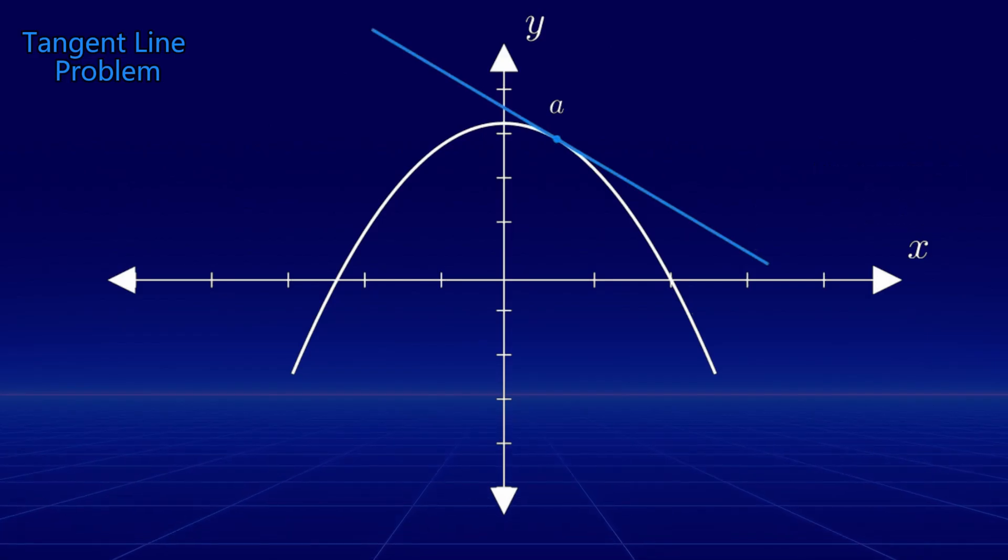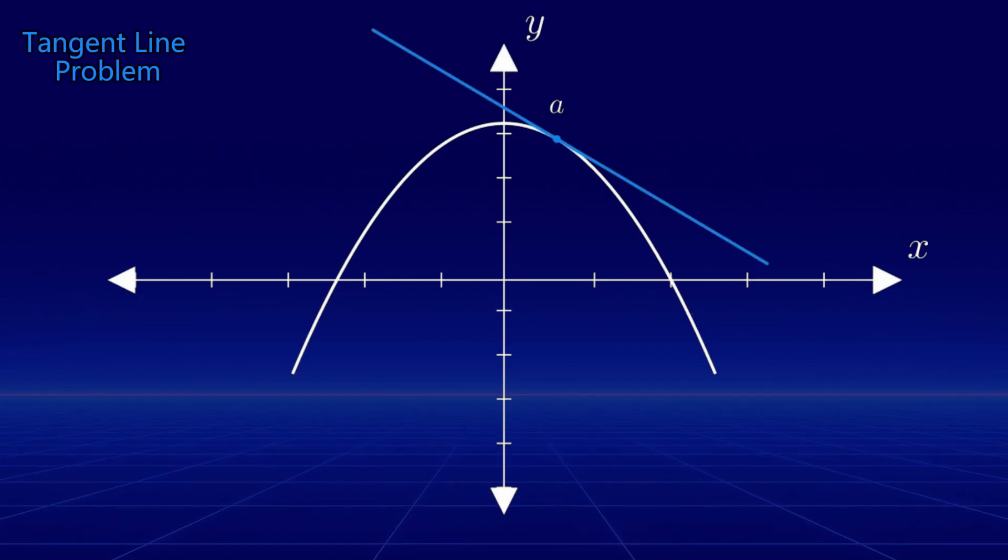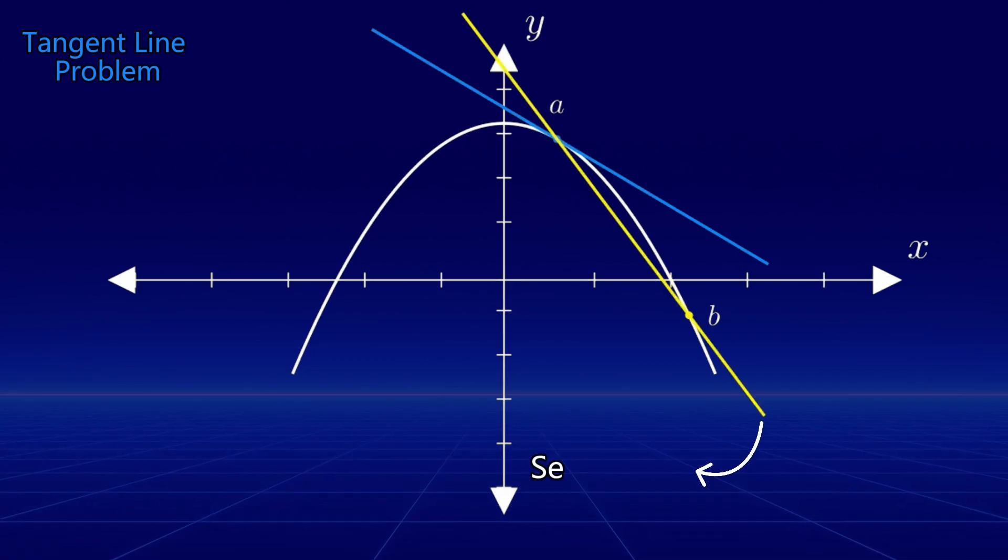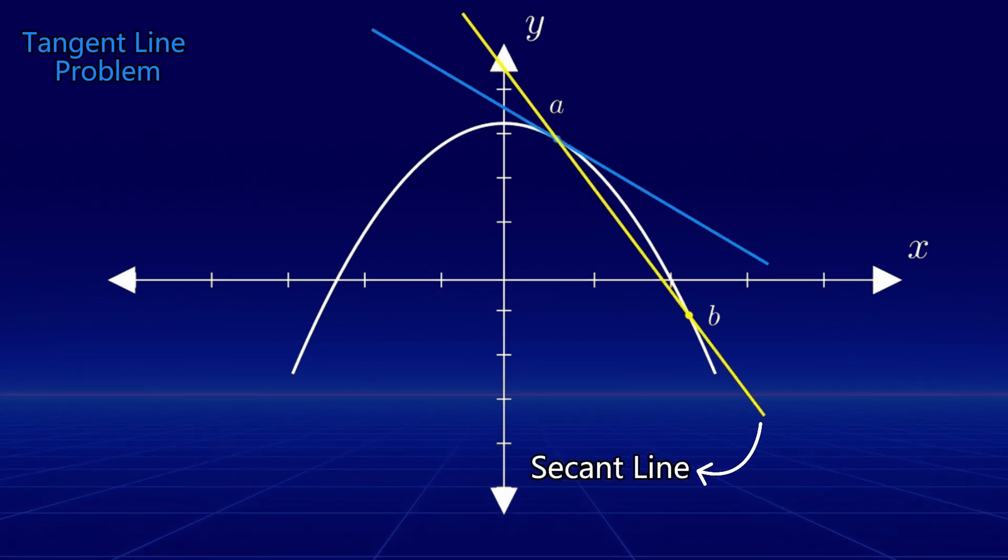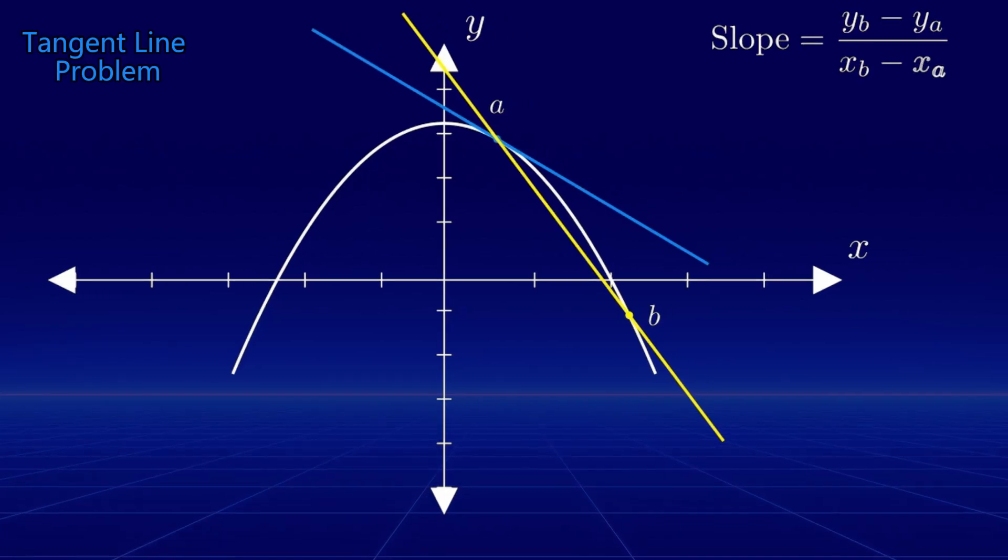A secant line is a line that intersects a curve at two points. Suppose we pick another point close to a, say b, and connect the two points with a secant line. From algebra, we know that the slope of the secant line is yb minus ya divided by xb minus xa.